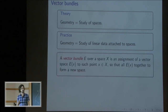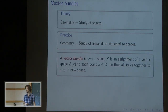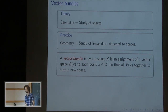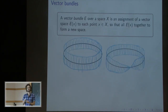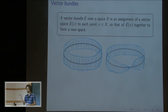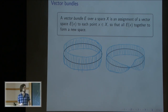Maybe the first example that you see of this is a vector bundle. A vector bundle is an assignment to each point of a space of a vector space, so that this whole thing again forms a space. For example, you could just take the Cartesian product of your space X — the black circle in this example — and a one-dimensional vector space. That would be a vector bundle. But in general, they can be twisted in some way, like on the right.